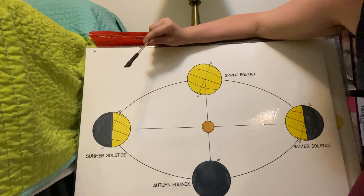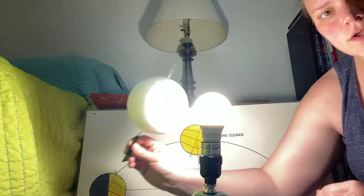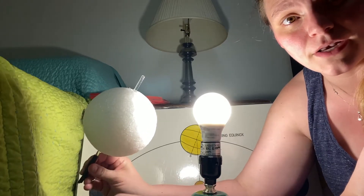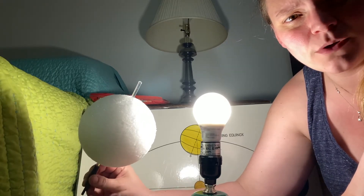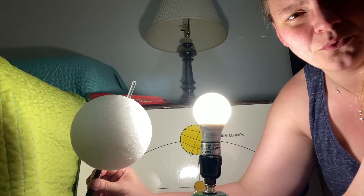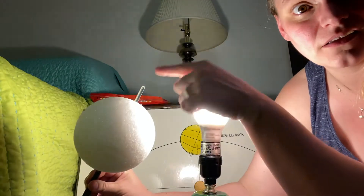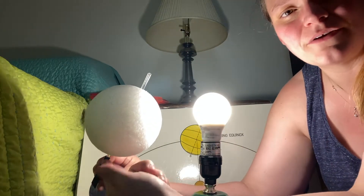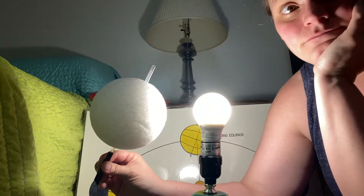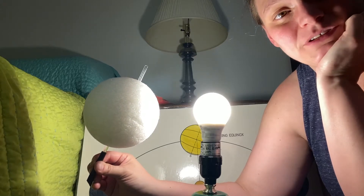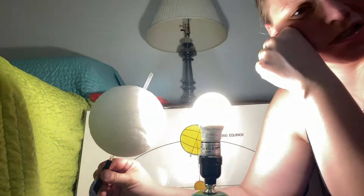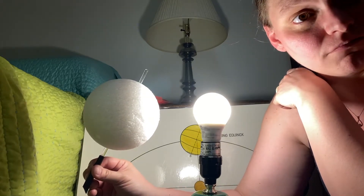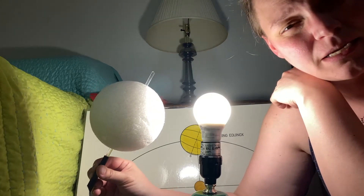I have one more thing I want to show you that relates to the tilt of the Earth's axis. Take a look at our north pole right now while it's spinning. Do you ever see that north pole really go out of the light? Not really — even looking up here, it's still pretty light up there. What about down here at our south pole — is it ever really getting light? No, it's really tilted away from the Sun right now. The north pole is tilted towards the Sun, the south pole is tilted away from the Sun, and this is our summertime in North America.